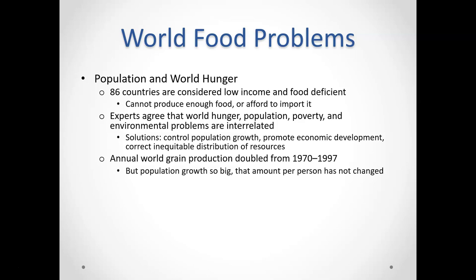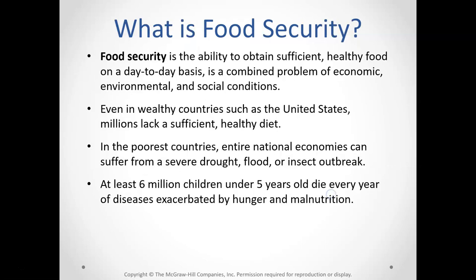We have dramatically been able to increase the amount of food we produce. Just between 1970 and 1997 — a period of about 30 years — we were able to double our grain production, which is amazing. But the problem is that the food we are creating is not always getting to the places that need it most. Food security is the ability to obtain sufficient healthy food on a day-to-day basis — knowing where your next meal is coming from and that it contains the fats, carbohydrates, protein, and nutrients you need to live a healthy, productive life.